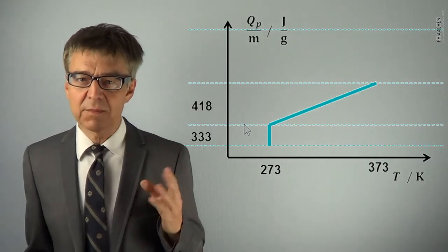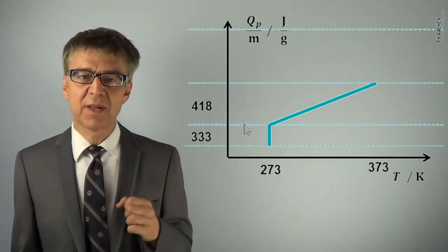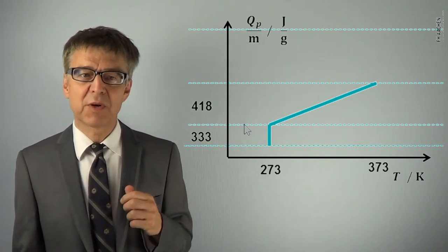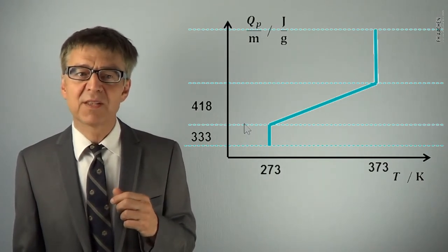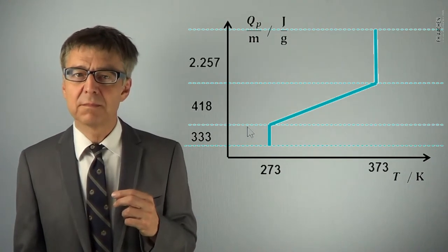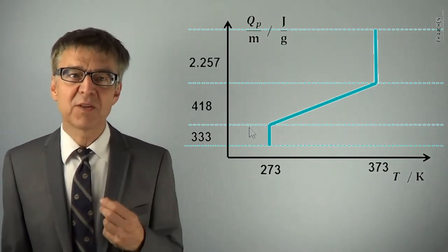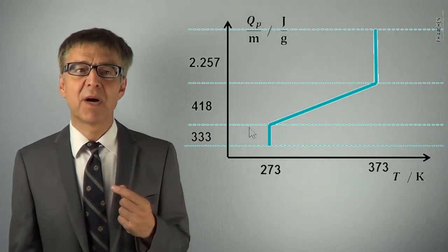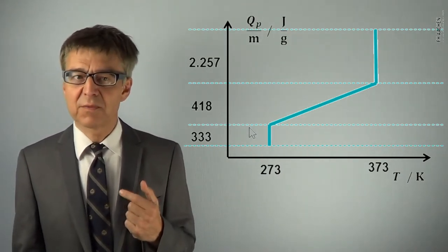2,257J are required to vaporize 1 gram of water to 1 gram of steam. Additional heat then increases the temperature of the steam above 373K.